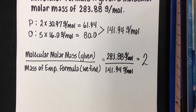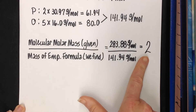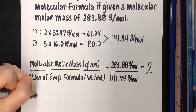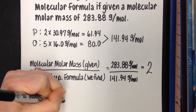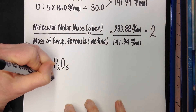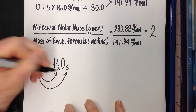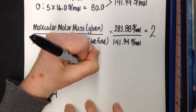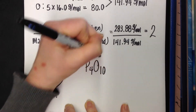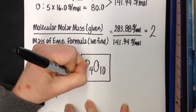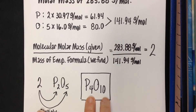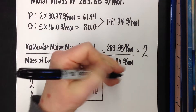We're going to take this multiple of 2 and multiply it by the subscripts in the empirical formula P2O5. Multiplying 2 by the subscript 2 and 2 by the subscript 5 gives us P4O10. So P4O10 is the molecular formula. You always know you're right if the molecular formula subscripts reduce back to the empirical formula.